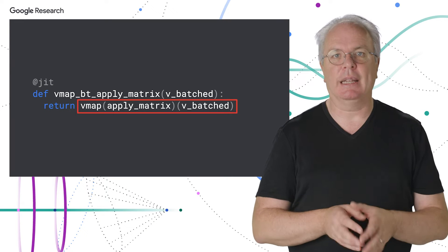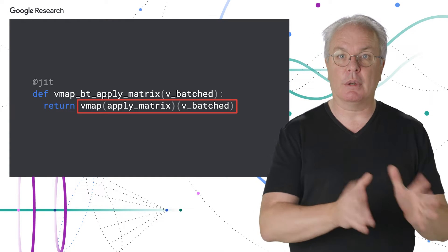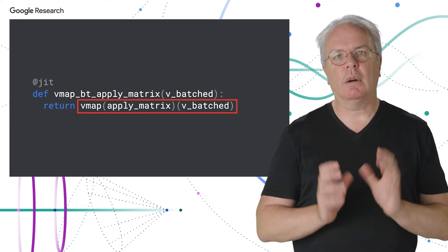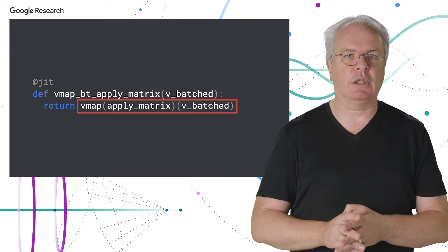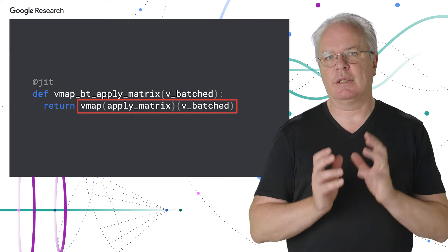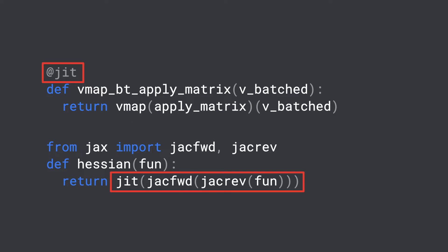JAX provides this automatically via the VMAP transformation, and this dramatically eases coding for those types of scenarios. It also supports large-scale data parallelism via the PMAP transformation, and this elegantly distributes data that's too large for a single accelerator. Also, there's just-in-time compilation, where using XLA to compile and execute JAX code on GPU and TPU accelerators, JAX allowed researchers with no previous experience in high-performance environments to still easily scale to one or many accelerators.